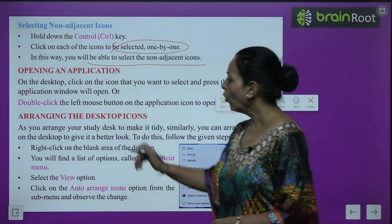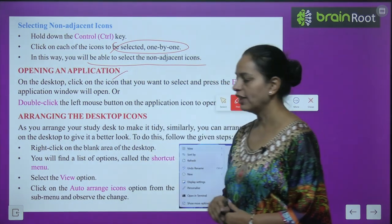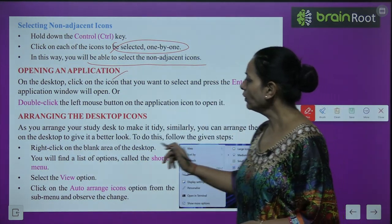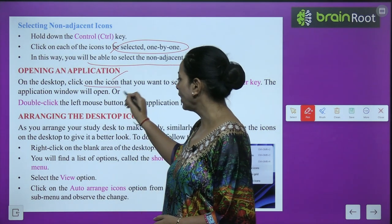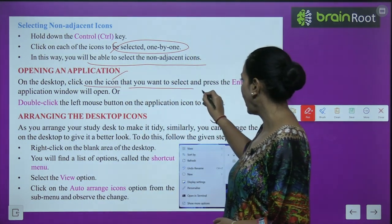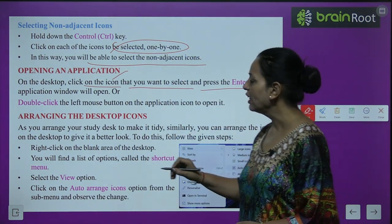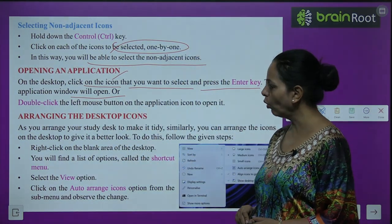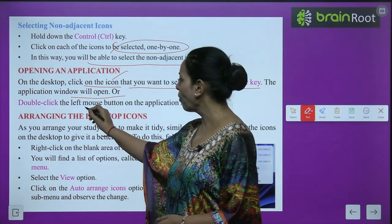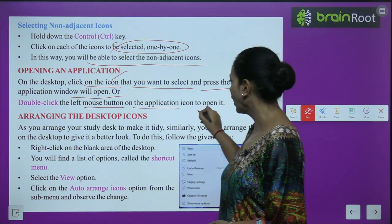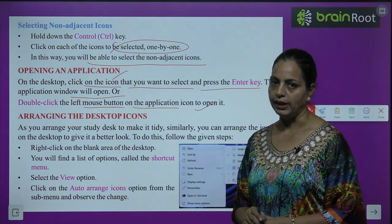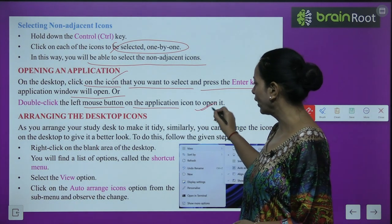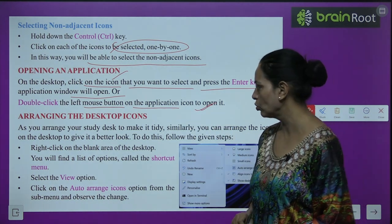To open an application, click on the icon on the desktop that you want to select and press the Enter key — the application window will open. Alternatively, you can double-click the left mouse button on the application icon to open it.